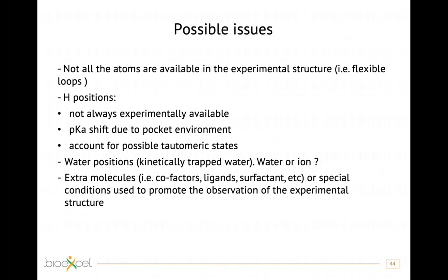One has to keep in mind that not all atoms are always available in the experimental structure. Sometimes flexible loops may be missing — they are sometimes modeled and added, sometimes not. The important aspect for simulation is to know which data in your structure comes from raw experimental data. Also, most structural techniques do not provide hydrogen positions, so most hydrogens seen in deposited structures are modeled.